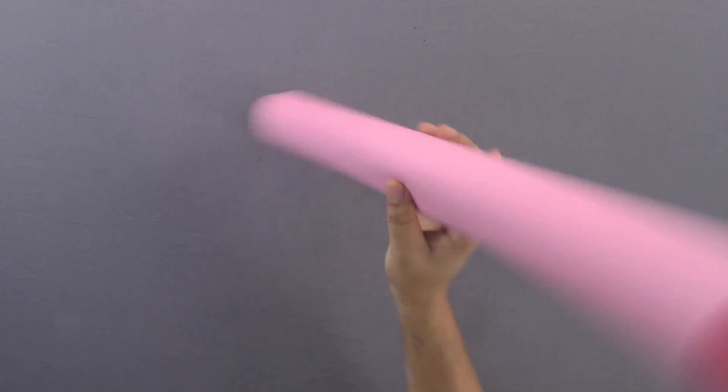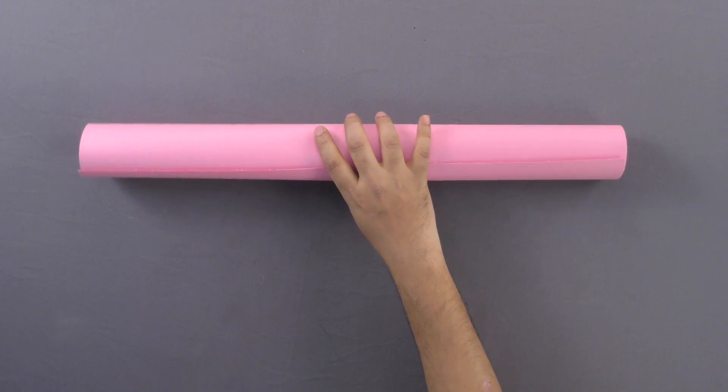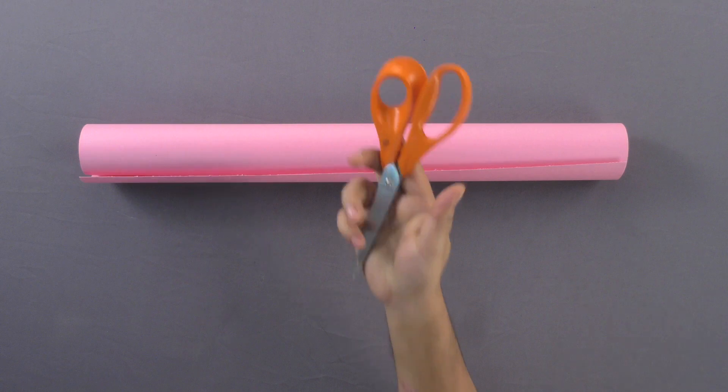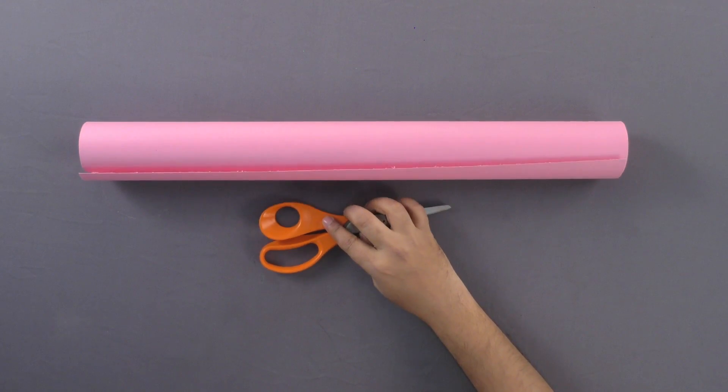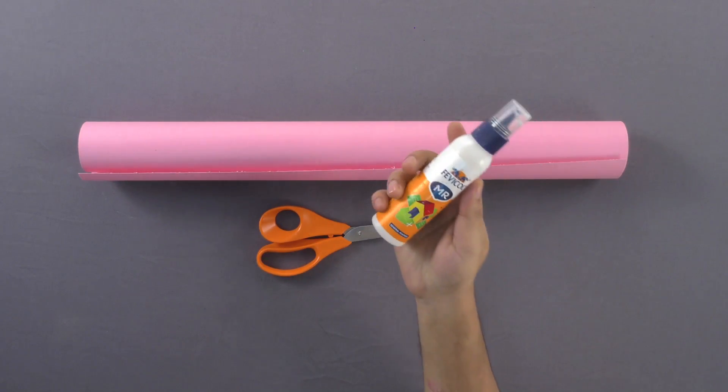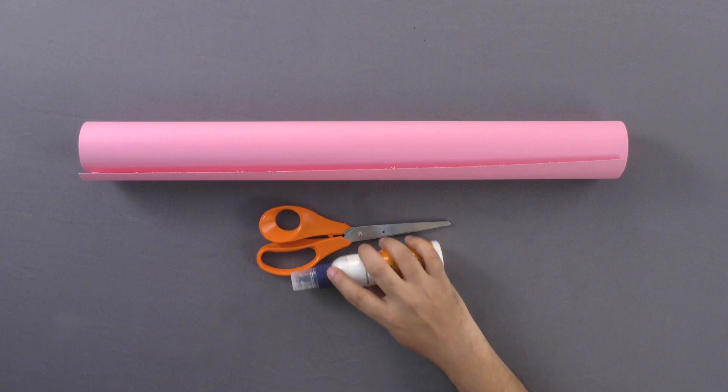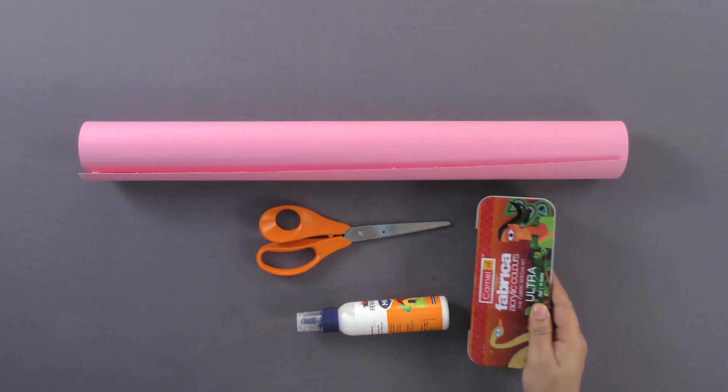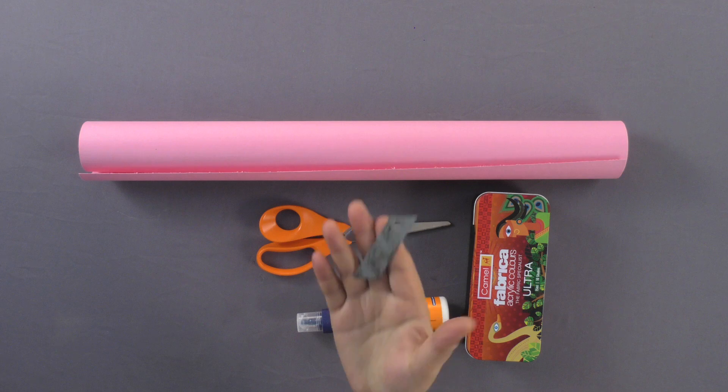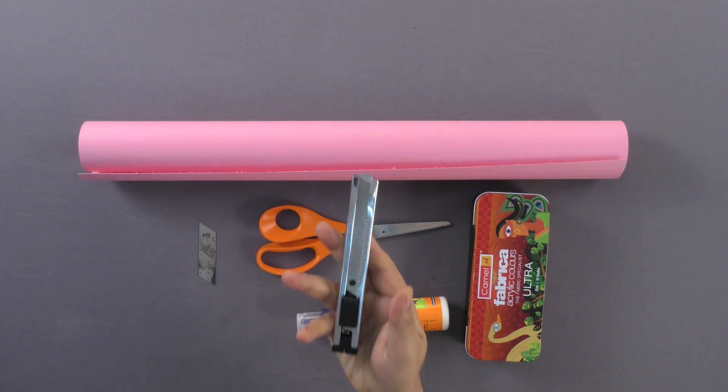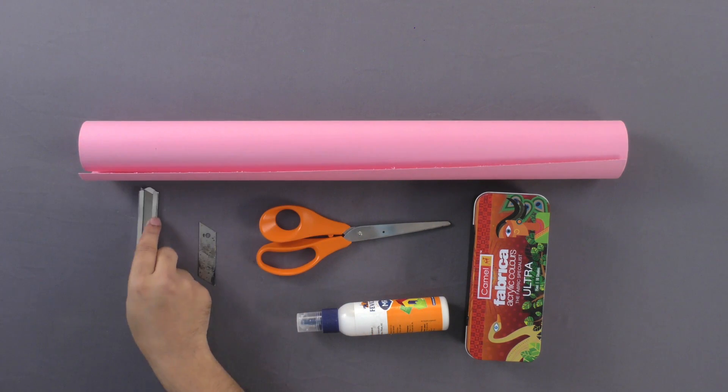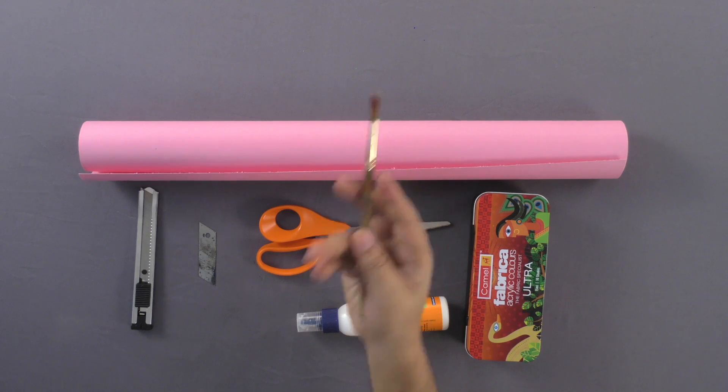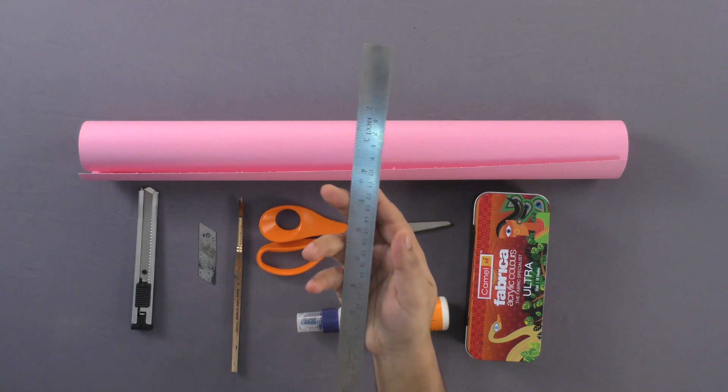Materials required: colored chart paper, scissors, adhesive, fabric color, blade, paper knife, brush, and scale.